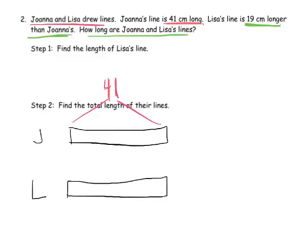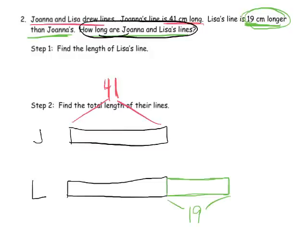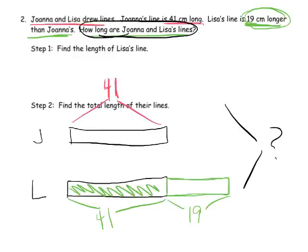Then it says, Lisa's line is 19 centimeters longer than Joanna's. So that means Lisa's tape diagram needs to be longer than Joanna's. And it doesn't matter exactly how long we make it, just it's got to be longer. And we know that that little piece right there is 19. And then the question says, well, how long is their combined length? So we want to know the combined length of these two. Well, we need to know this length right here. Well, it's 41 because we began the whole process drawing two bars that were identical in length. So Lisa's length is 41 plus 19.